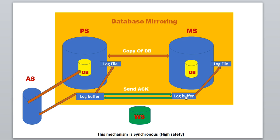At the same time, the log buffer sends a copy of the log to the mirror database on the mirror server. On the mirror server, the log buffer writes the log to the log file. Once the log file writing is done, it sends an ACK signal back to the principal server's log buffer. Once the log buffer receives the ACK acknowledgement signal, it tells the application server it can process further requests.